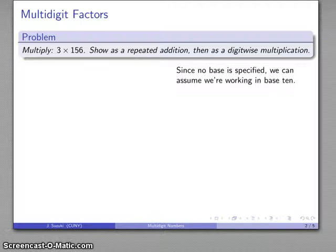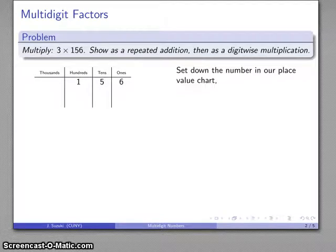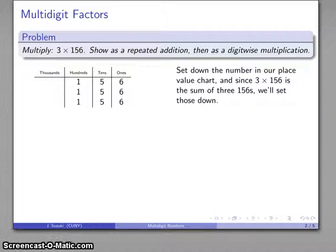So again, we don't specify a base, so because there's no base specified, we can assume we're working in base 10. We'll set down the number in our place value chart, so that's one hundreds, five tens, six ones, and I want to find three times that amount, so that means I'm going to take three of those, so I'll set down three of them, and I'll add them together.